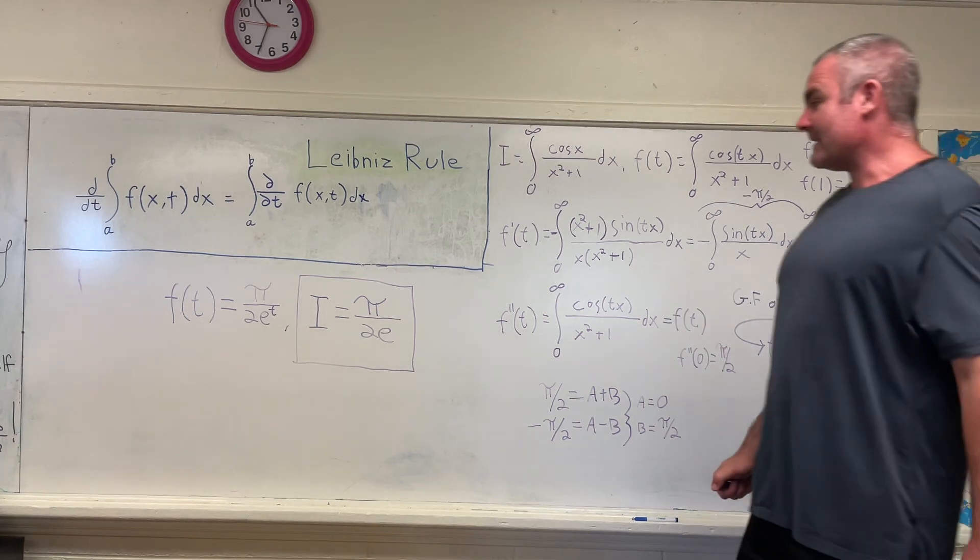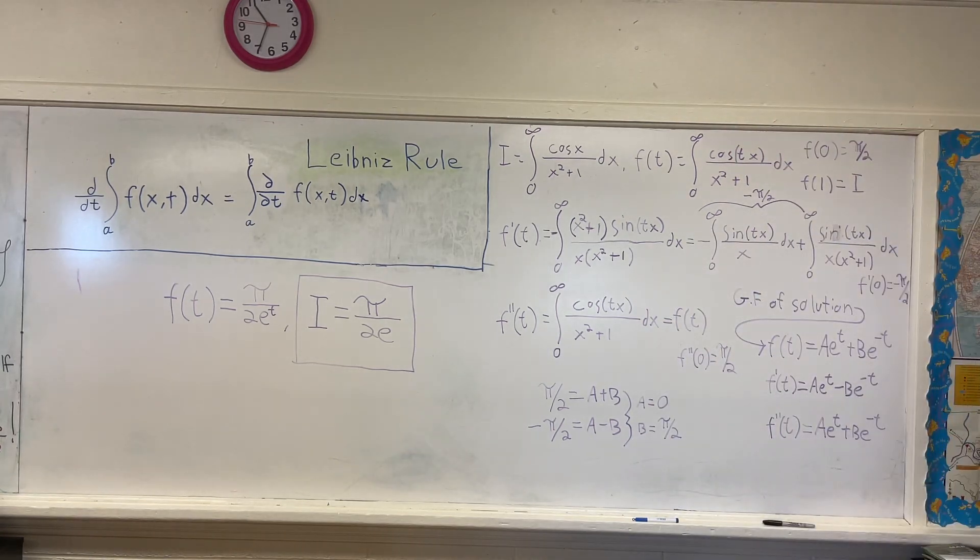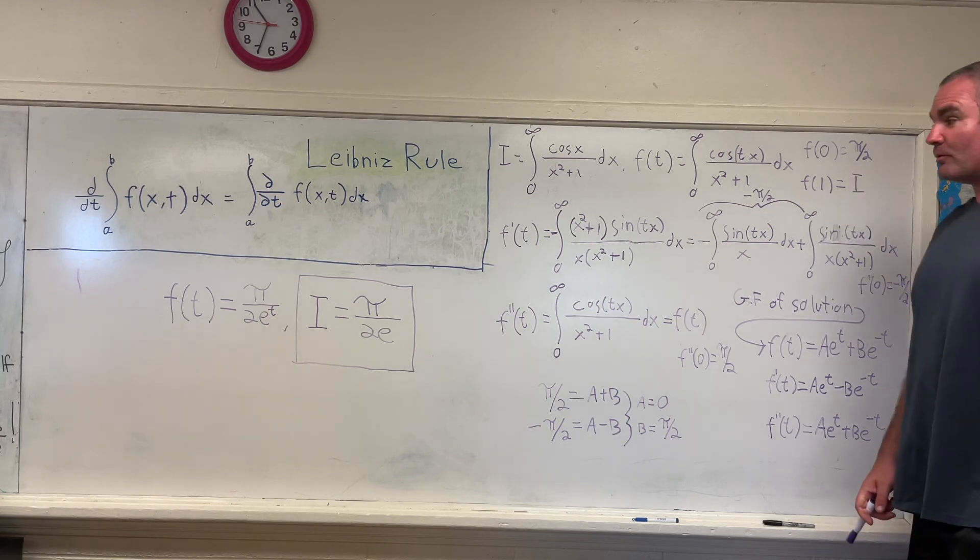So plugging in a and b into our general solution here, we get that f of t is equal to pi over 2 times e to the negative t. And then plugging in 1, we get that i is equal to pi over 2e.